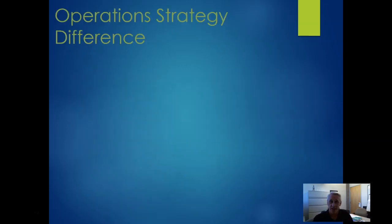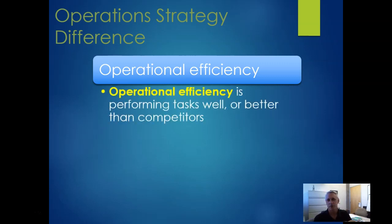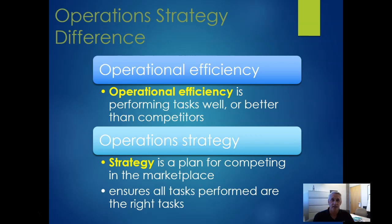We need to make a distinction here. Operation strategy is different than what people usually think of as operations efficiency. Operations efficiency is where we're trying to do things well — make a series of tasks cheaper, faster, everything that leads to efficiency. That's not what we're talking about with operation strategy. Operation strategy helps us facilitate and embody a set of tasks and functions that the company will do to enable our business strategy to be enacted.